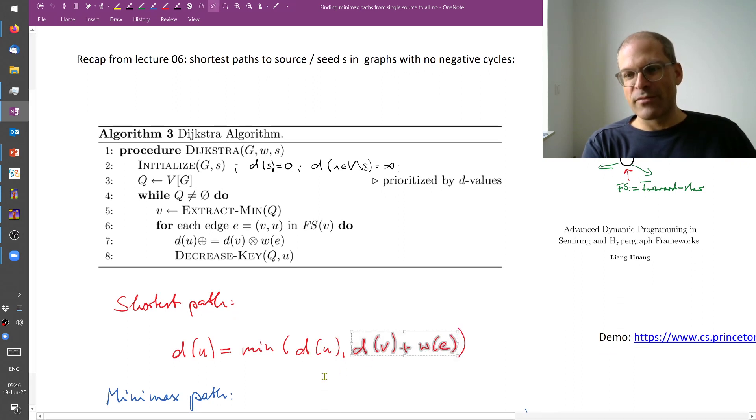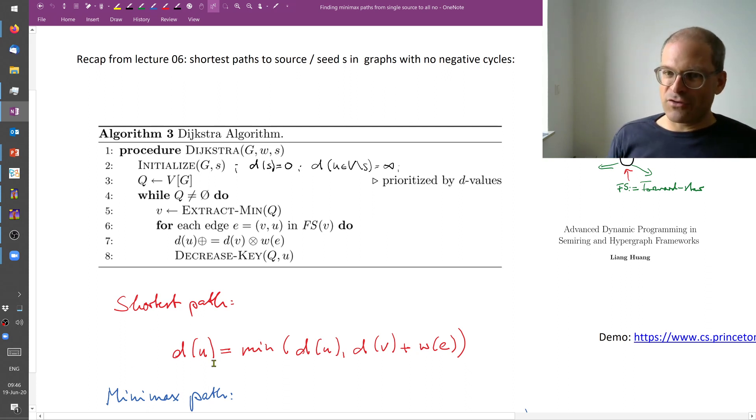In other words, if the cost of the shortest path that we've previously found remains the lowest then we keep it, we don't do anything. If on the other hand the cost of the shortest path to v plus the cost of the edge from v to u is smaller than the best previous cost, then we update our new estimate for how far this node is from the source or the seed. We did this before and there was a demo that you could go through in detail.